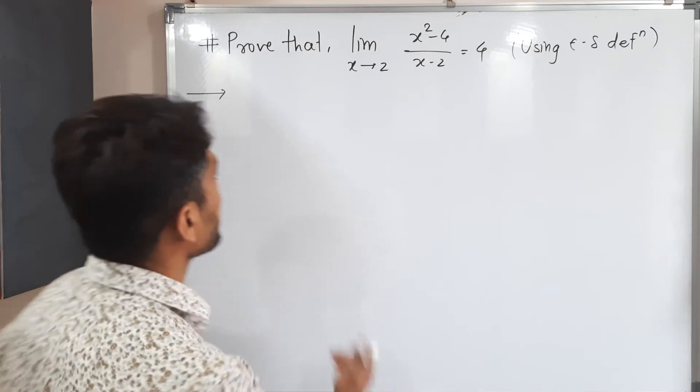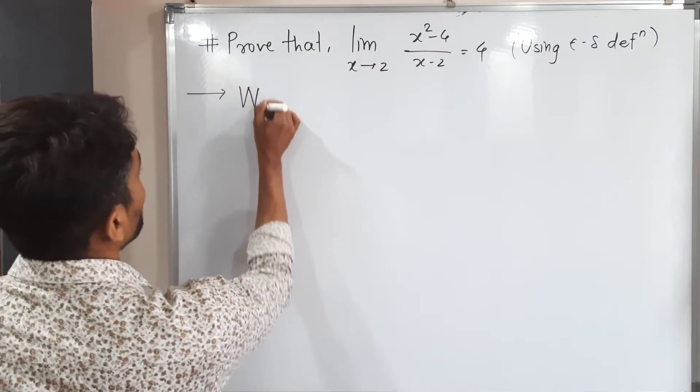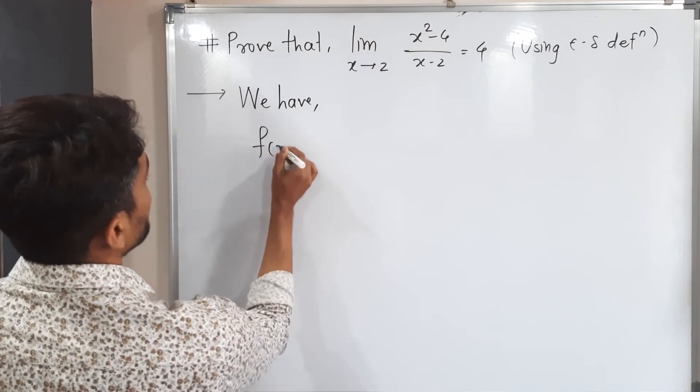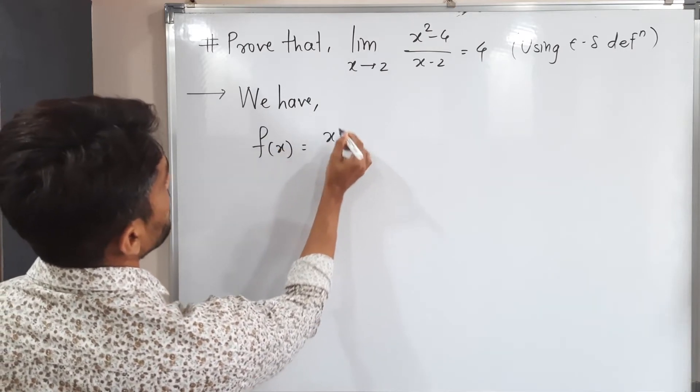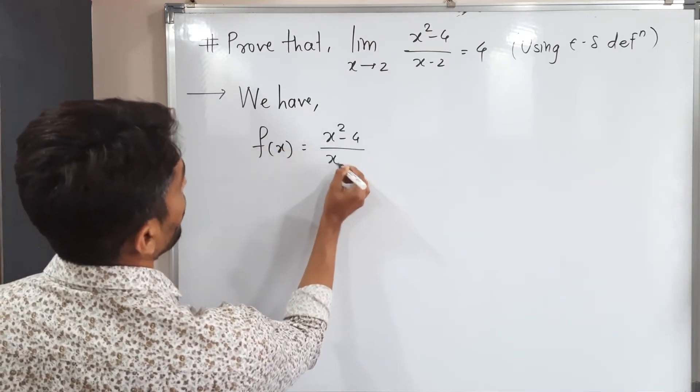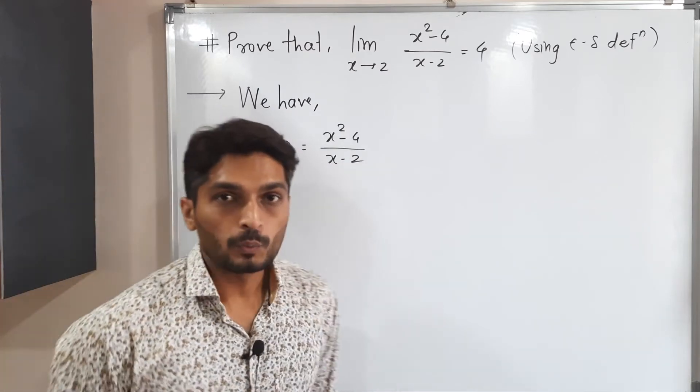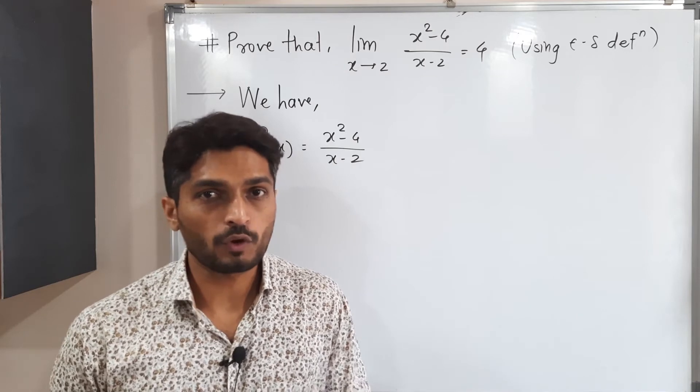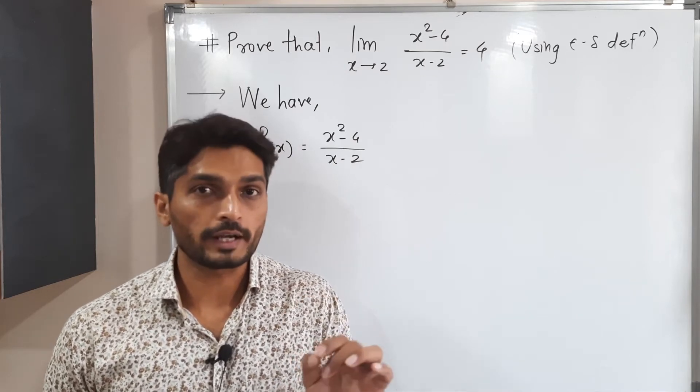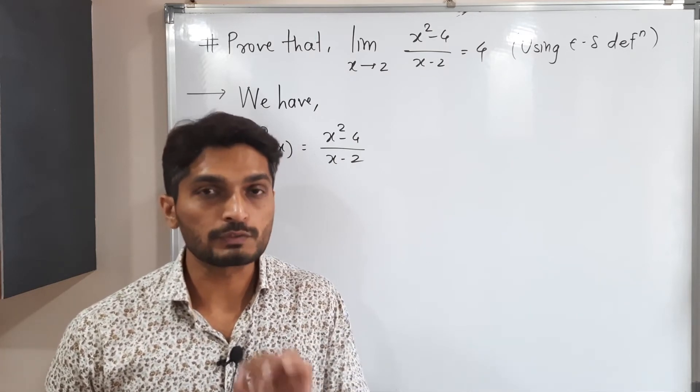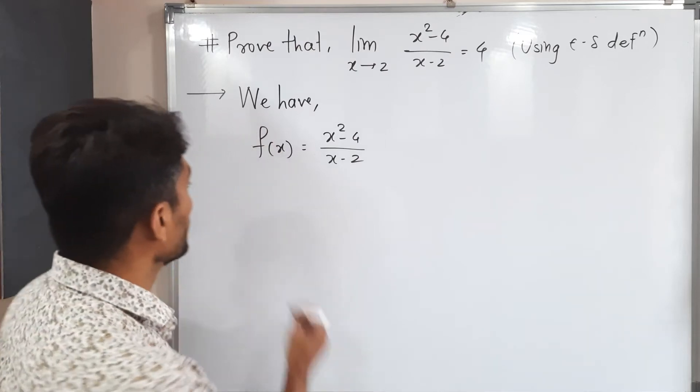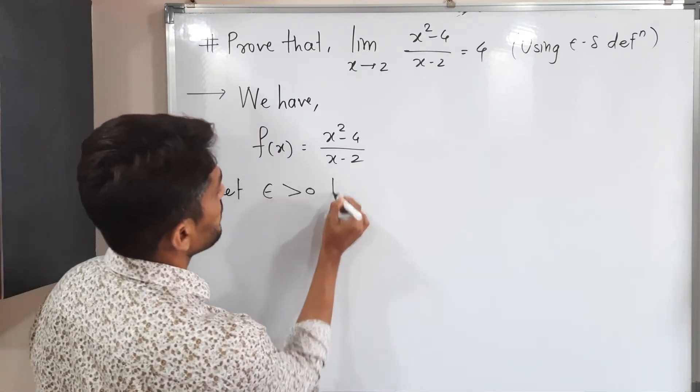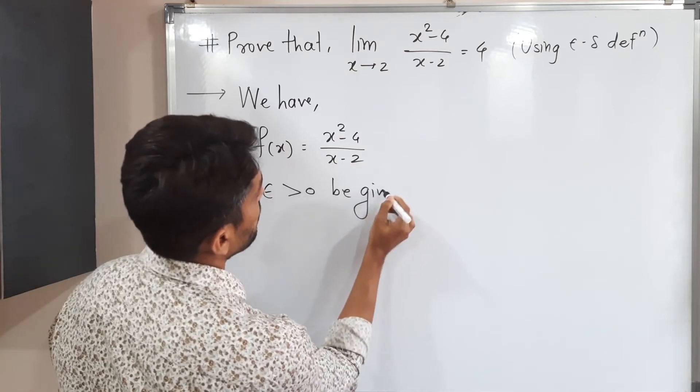So what is function here? Let me write it first. We have f of x is equal to x square minus 4 upon x minus 2. We have to use epsilon delta definition. Let us take epsilon first. And for that epsilon, we have to find a suitable delta which will satisfy the definition.